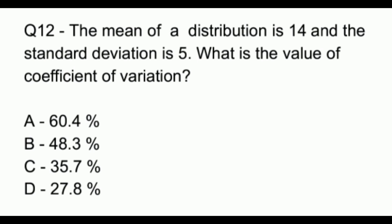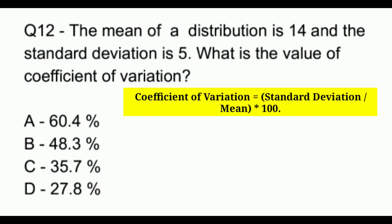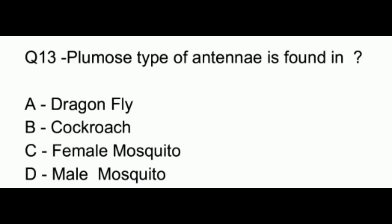Question number 12. The mean of a distribution is 14 and the standard deviation is 5. What is the value of the coefficient of variation? Option A, 60.4%; option B, 48.3%; option C, 35.7%; option D, 27.8%. The answer is option C, which is 35.7%.